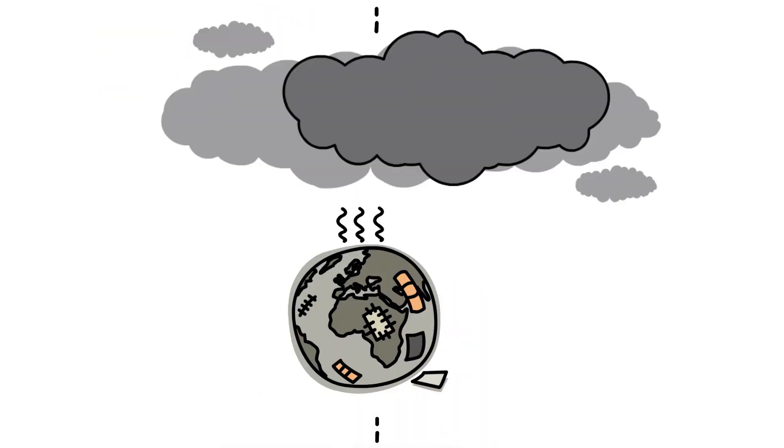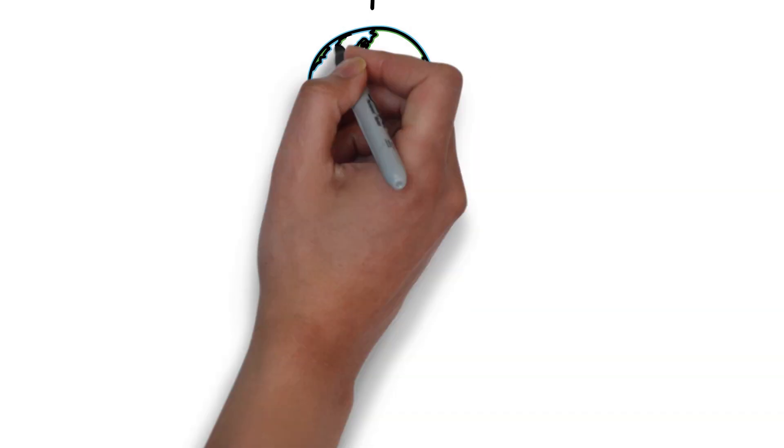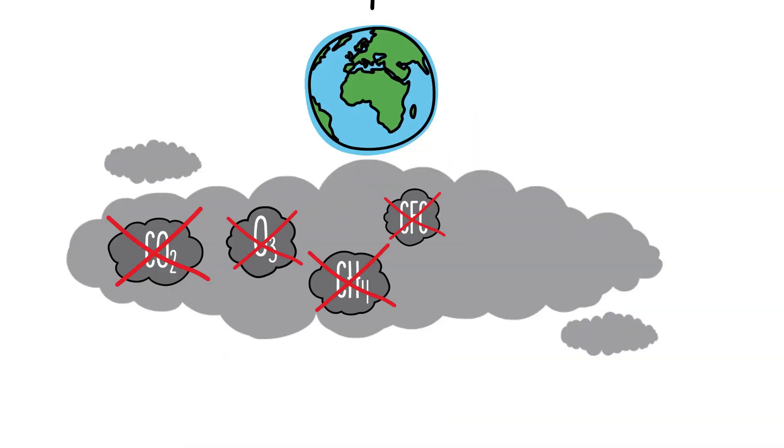Carbon neutrality reduces the negative impact on the environment to achieve a net result of zero emissions. But how is it reached?